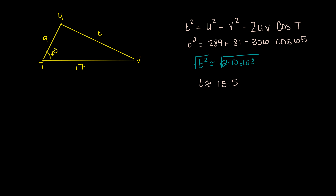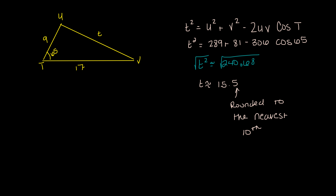Rounding to the nearest tenth, which is what they want us to do. So there we go — this is using the law of cosines, and this is why we use it: because we just couldn't use the law of sines with the values given to us. Thanks for watching, and remember to like and subscribe for more Algebra 2 videos. I'll catch you in the next video.